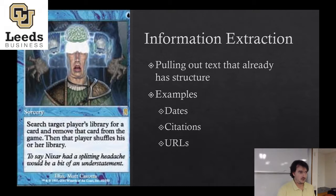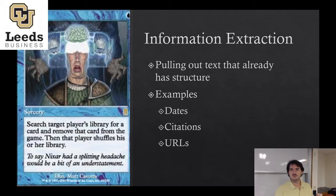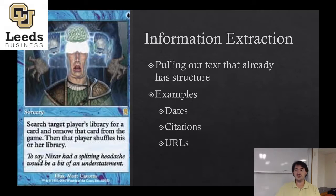Another example from our second exam: I had you pull out which of these are ales. You were looking for the word 'ale' and extracting a property from rows of data. This is another thing you guys have already done, and it wasn't too terrifying.